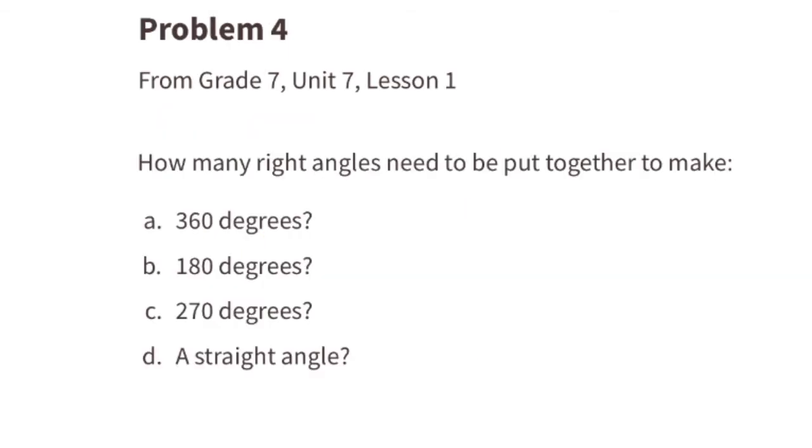Problem number 4 from 7th grade, Unit 7, Lesson 1. How many right angles need to be put together to make each of the following angles? Here's just one right angle, and a right angle is 90 degrees.